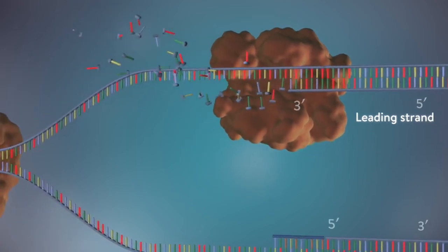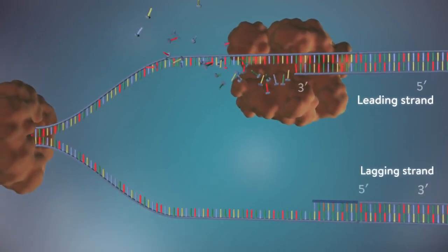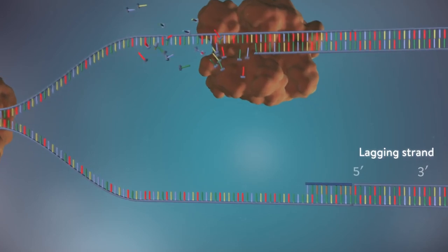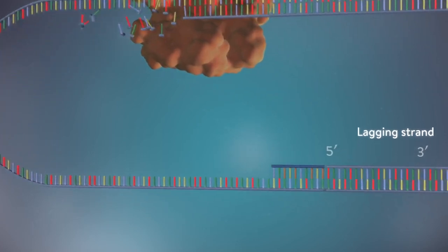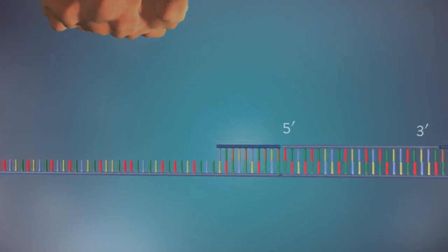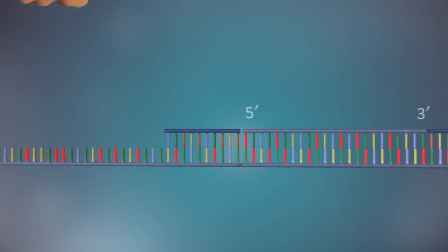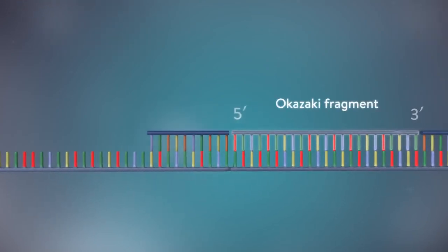The other strand, the lagging strand, cannot be made in this continuous way because it runs in the opposite direction. The DNA polymerase can therefore only make this strand in a series of small chunks called Okazaki fragments.